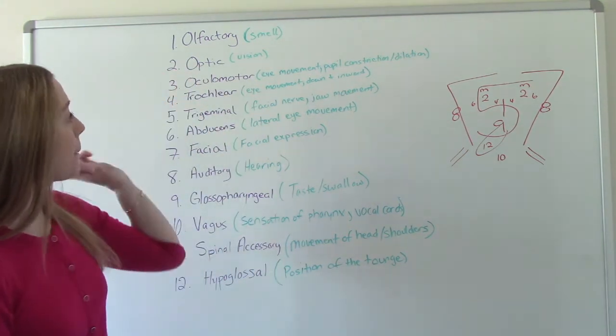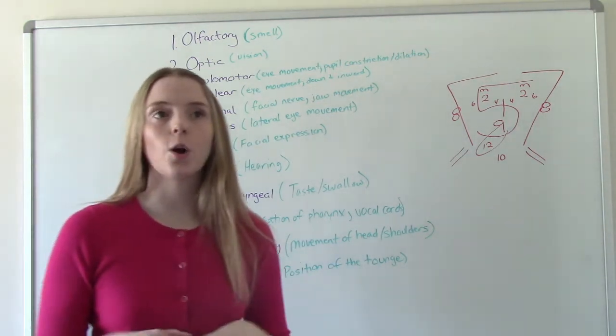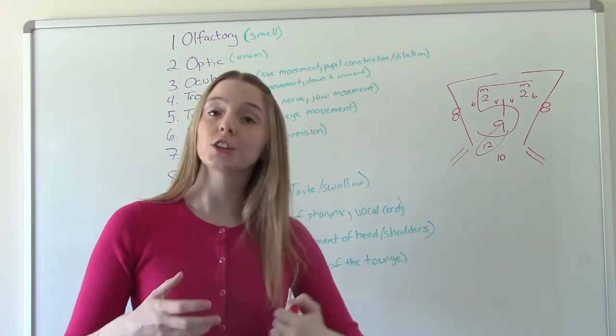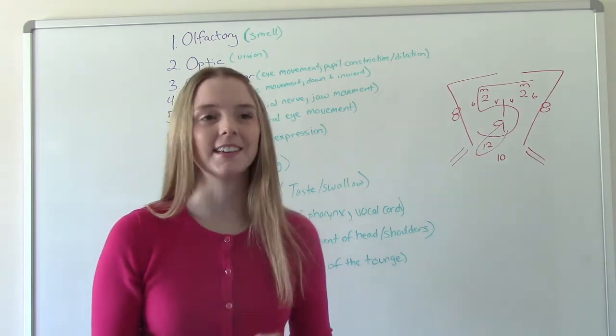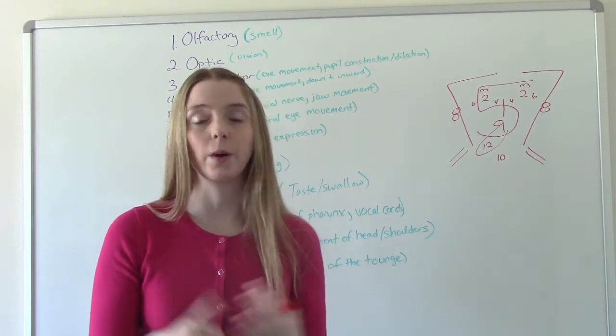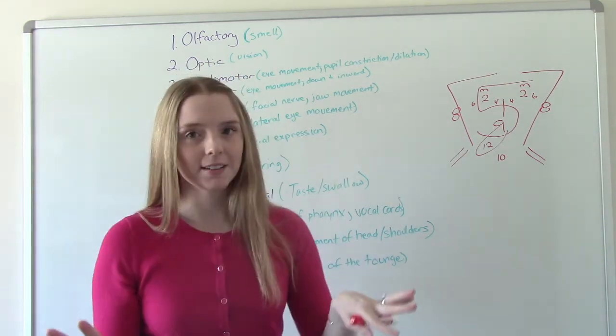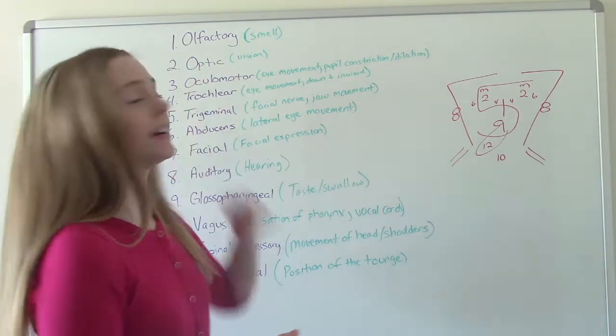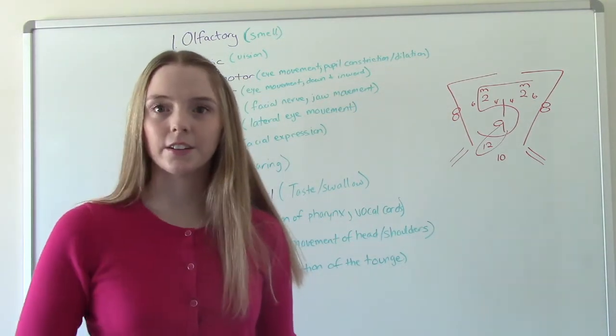Our second one is optic, which is our vision. So the way we can have them test vision is have them read something. Make sure it's in the language they understand and it's appropriate font size. And if they have glasses that they need to wear, that they're wearing their glasses, all of that taking into consideration, if they can read it, then that's good. Intact optic, intact cranial nerve number two.